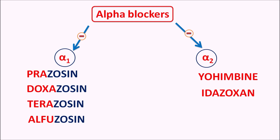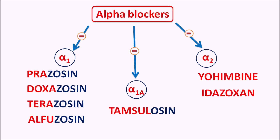There is another category of drugs which block the alpha 1A receptors, which are expressed on the bladder as well as prostate tissue. We have the drug tamsulosin, which is particularly used in the treatment of bladder and prostate enlargement.